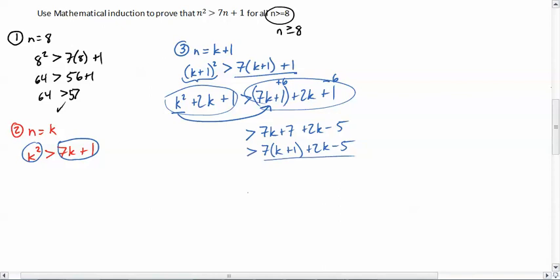Alright, now this that I have below is less than, of course, that k plus 1 squared that we were talking about earlier, because this is equal to that. So, this is less than that, and I want you to compare this statement that you have right here to the statement that we have right here. Here, I'm supposed to be showing that the k plus 1 squared is bigger than 7k plus 1 plus 1. So, essentially, k plus 1 squared is bigger than my middle term here. Is this bigger than what I'm supposed to be proving? Well, I've got the 7k plus 1 right there. So, which is bigger? 2k minus 5 or plus 1?